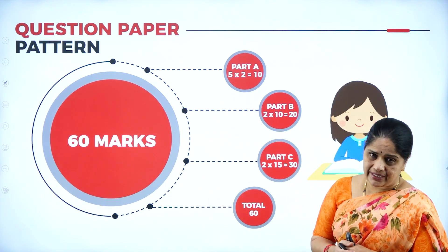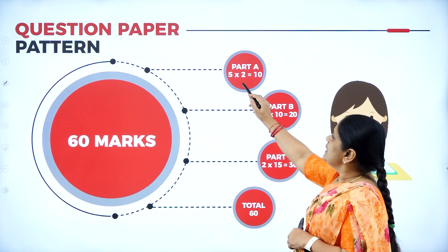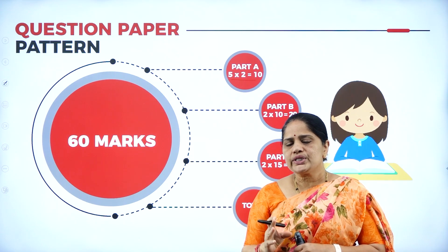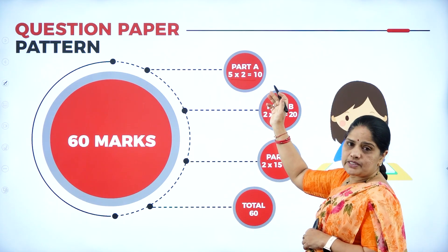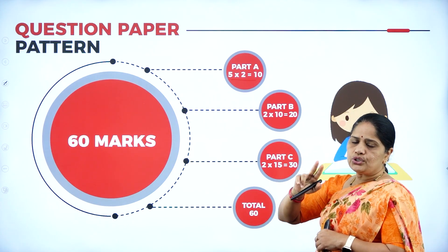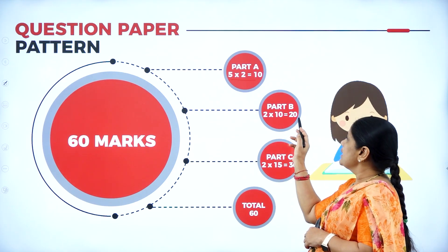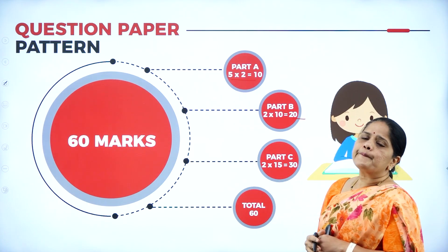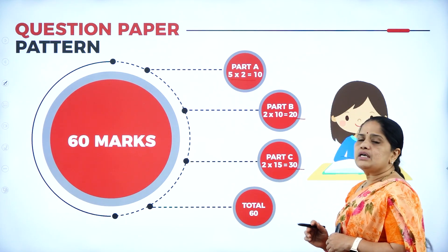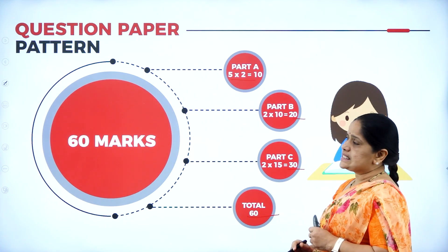Next, the question paper pattern. For Part A, they will give you six questions and you will have to answer any five — they are all two-mark questions, so 5 into 2 comes up to 10. Then under Part B, you will be asked to write two questions out of four, so 2 into 10 comes up to 20. In Part C, again you will have four questions and you have to answer any two, so the outcome is 30. So the total for external marks is 60 marks.